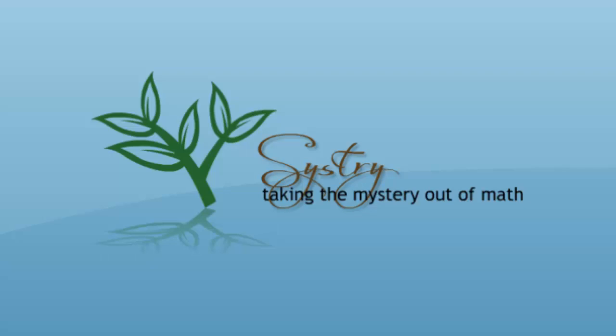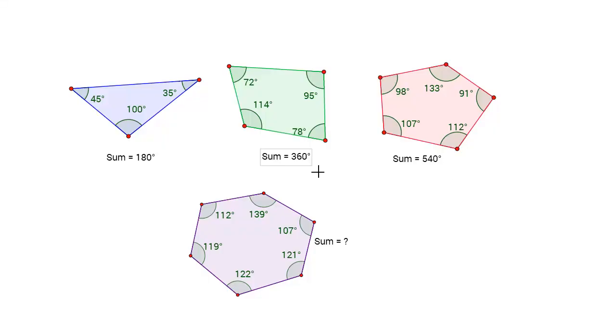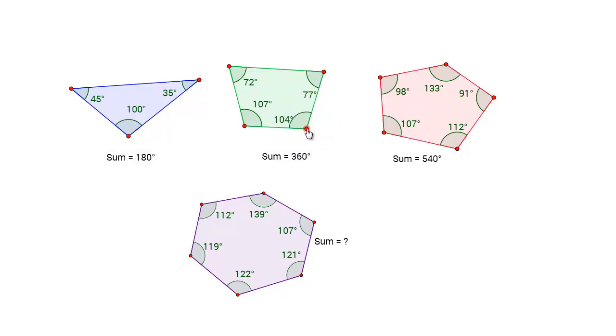Numbers often follow patterns in real life. Sometimes, adding the same number over and over creates a series. Other patterns are more complex. For example, let's look at the measurements of the angles of some polygons.